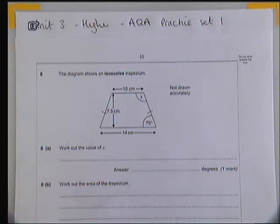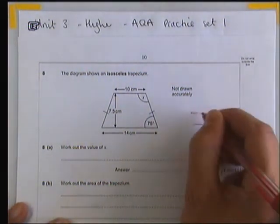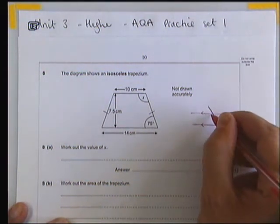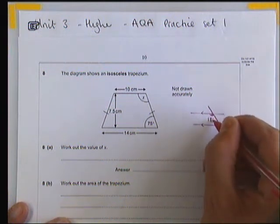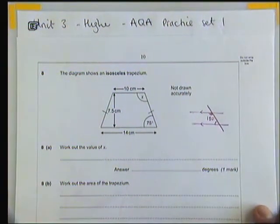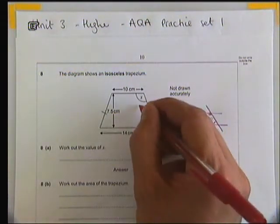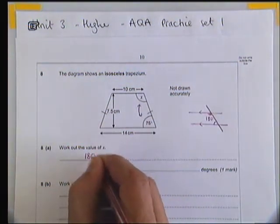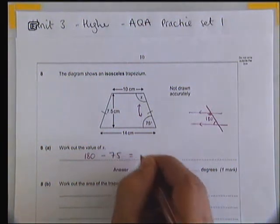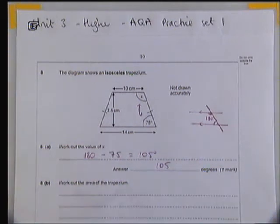Part 8a says work out the value of x. Now in any trapezium, because there are a pair of parallel lines, the two angles in the corner will always add up to make 180 degrees. Therefore, these two angles will add up to make 180 degrees, and we can do 180 take away 75, which is 105 degrees.